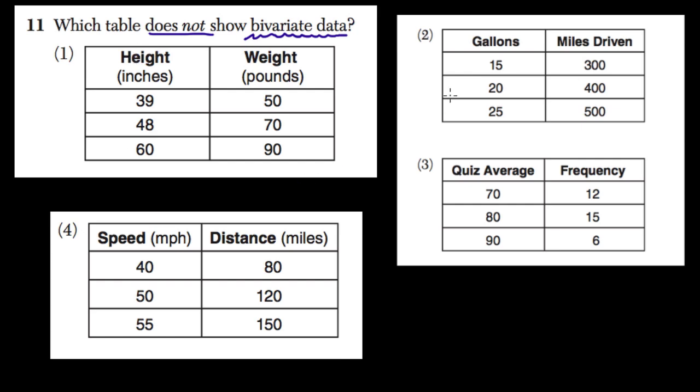Okay. So here there are one, two, three, four tables. And we're looking for the one that is not a bivariate data table. In the first table, is this bivariate? Well, yes. The two variables are height and the weight.